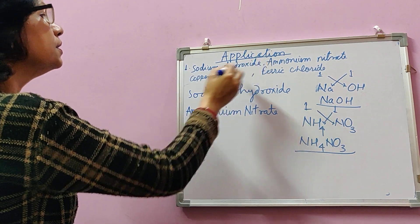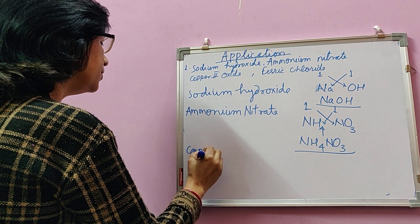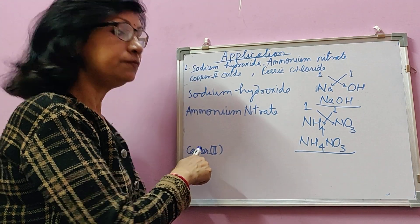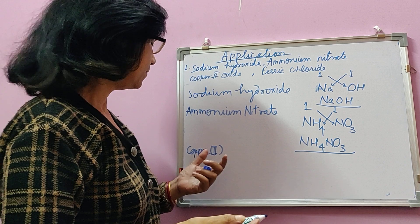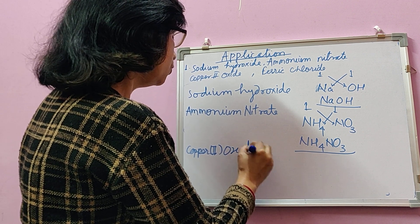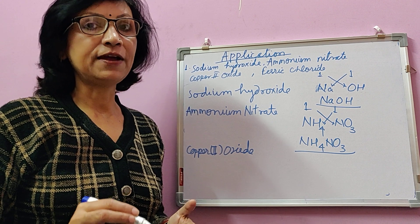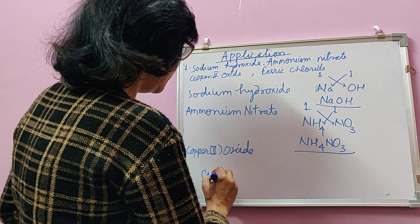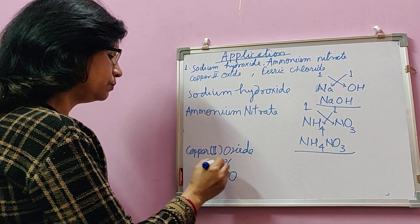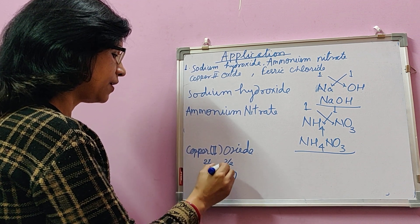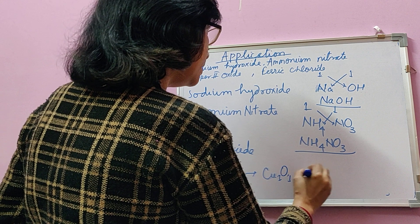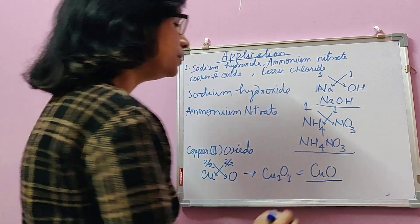Third is copper(II) oxide. The valency of copper is given as 2 in the question because copper is a variably valent ion — it can have valency 1 (cuprous) or 2 (cupric). So copper(II) oxide means cupric oxide. Cupric valency is 2 and oxide valency is always 2. Both are divisible by 2, so we divide both by 2, giving 1 and 1. The formula is therefore CuO.